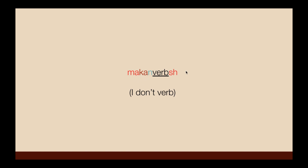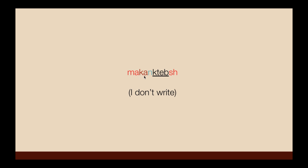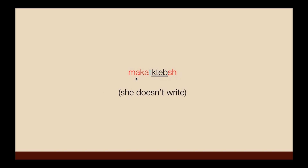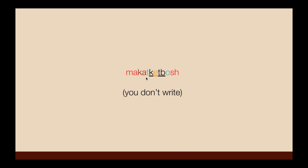So: ma-ka-verbs, ma-ka-verbs — meaning 'I don't verb.' For example, with 'ktyb' again: ka-n-ktb becomes ma-ka-n-ktbsh; kat-ktb becomes ma-kat-ktbsh. The full negative paradigm: ما كيكتبش، ما كتكتبش، ما كان كتبوش، ما كتكتبوش، ما كيكتبوش.